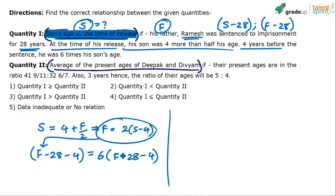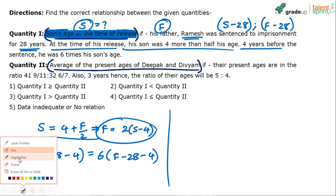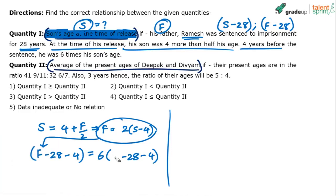Correction: in the second equation, the 6 times factor applies to the son's age, not the father's age. So it should be 6 times S-32 on the right side. Now substitute F = 2S - 8 into that equation and solve.